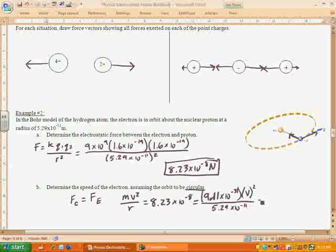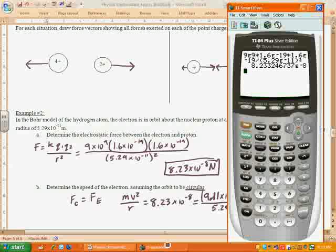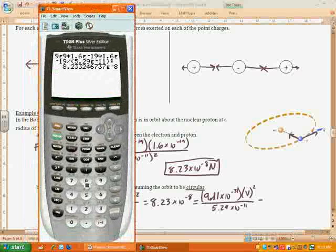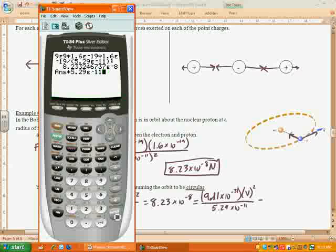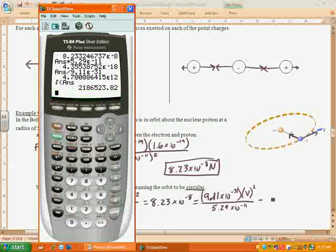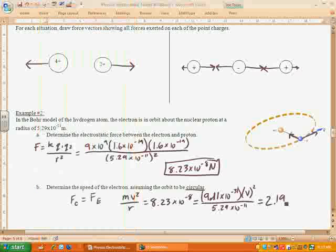Divided by the radius. So 5.29 times 10 to the negative 11th. And of course that's equal to 8.23. So let's pull out our calculator. So first we'll take our 8.23 times 10 to the negative 8th. We'll multiply by 5.29 times 10 to the negative 11th. Now this is up there, so now we need to divide by the 9.11 times e to the negative 31st. And then we're left with v squared, so we'll take the square root. And we get 2.19 times 10 to the 6th meters per second.